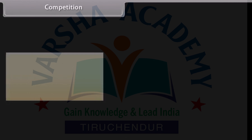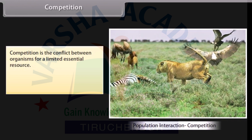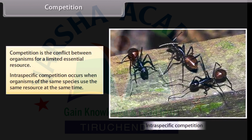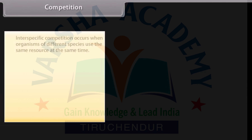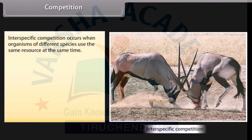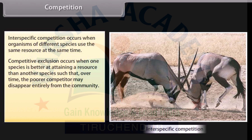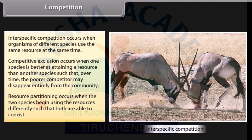Competition is the conflict between organisms for a limited essential resource. Intraspecific competition occurs when organisms of the same species use the same resource at the same time. Interspecific competition occurs when organisms of different species use the same resource at the same time. Competitive exclusion occurs when one species is better at attaining a resource than another, such that over time the poorer competitor may disappear entirely from the community. Resource partitioning occurs when two species begin using resources differently such that both are able to coexist.